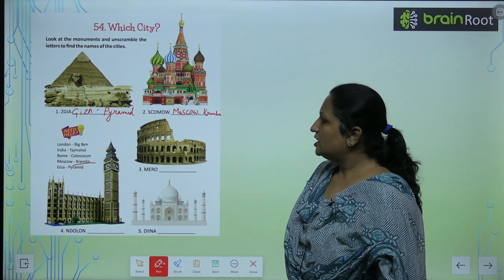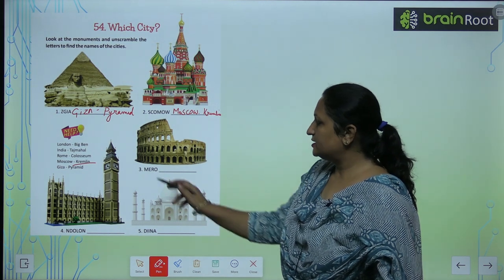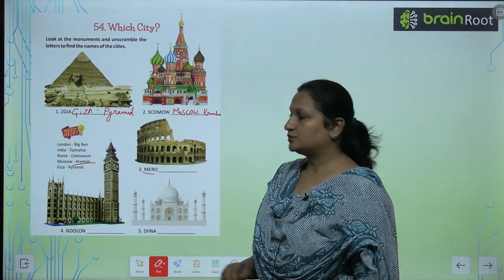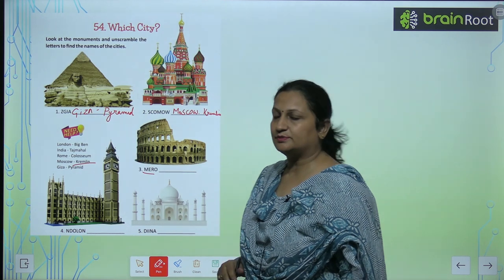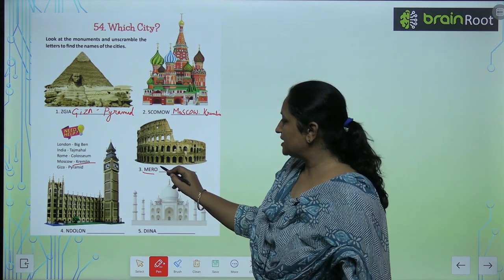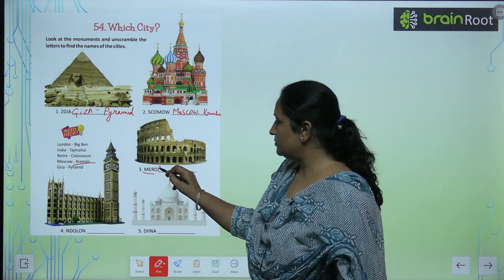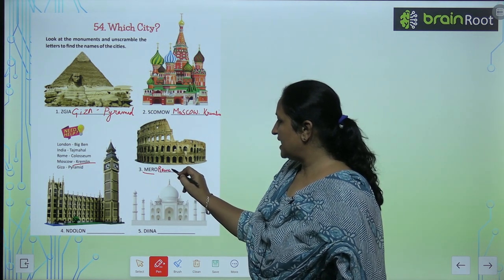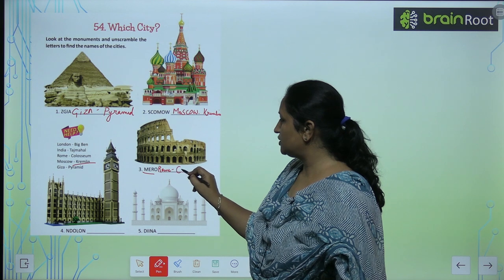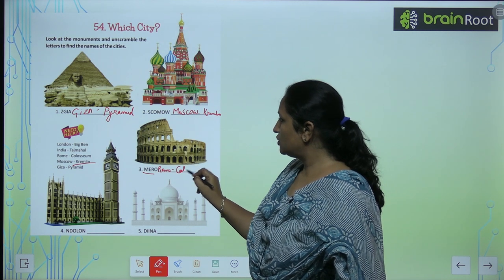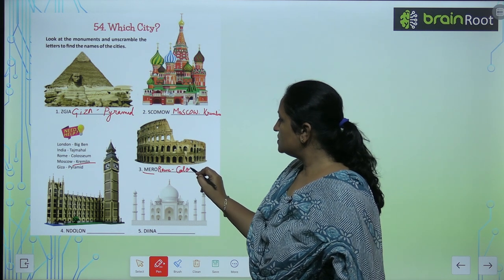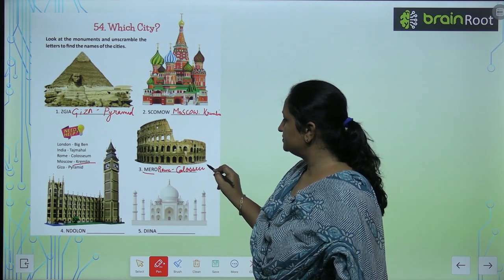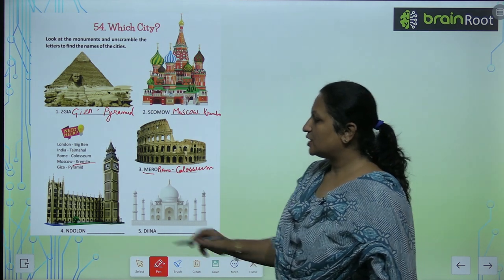Then the third one — this is Rome. Rome mein kya hai? Colosseum. So, aap yahaan likhogei Rome, and you will write Colosseum. Colosseum.